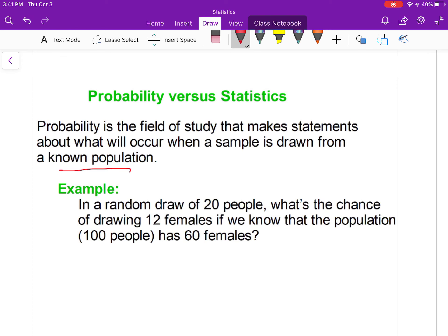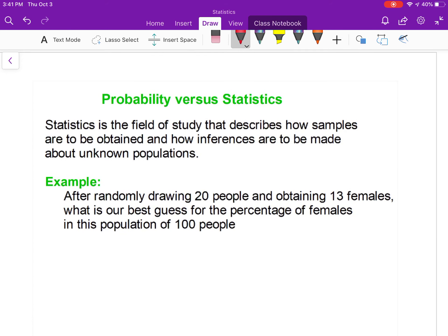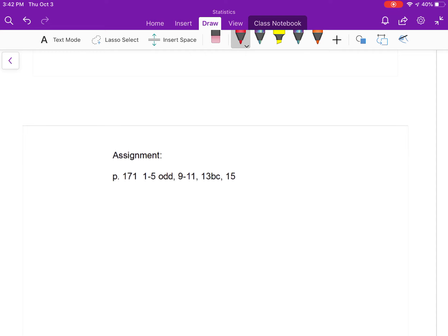Whereas statistics is a field of study that describes how samples are to be obtained and how inferences based on those samples are made toward unknown populations. For example, a random sample of 20 people, 13 females are observed. What is the best guess of the percentage out of those 100 people? Probability is on a known population; statistics is on an unknown population.